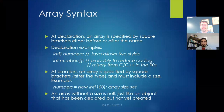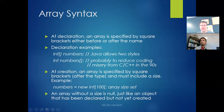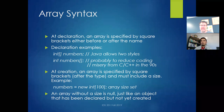Now, at declaration, an array gets specified by square brackets either before or after the name. So if you wanted to declare an array of type int called numbers, you could do it int[] numbers or int numbers[]. Most things in Java there's one and only one way to do it, but with arrays it lets you do it either way. This is very unusual for Java.